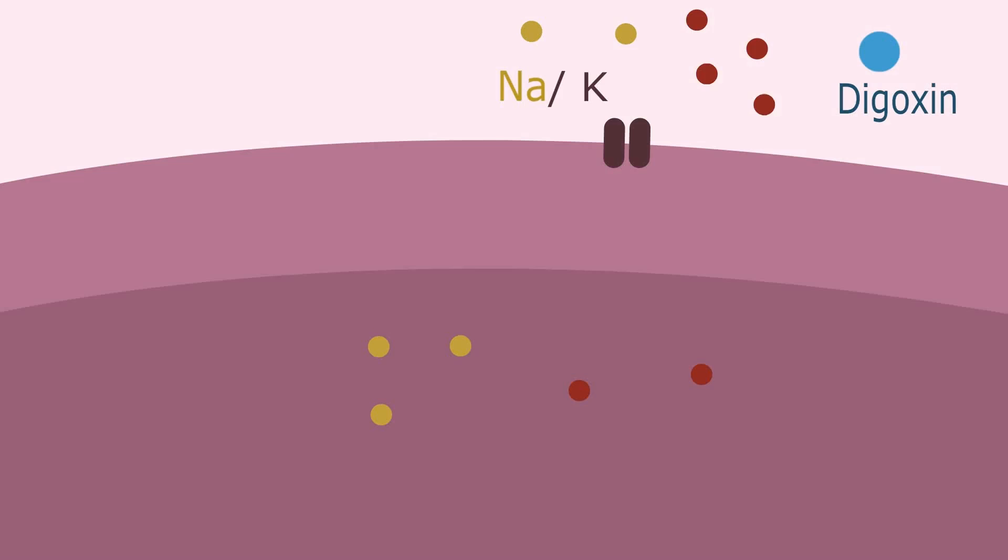Digoxin will bind to the sodium potassium channel and block its natural effect, which is to transport sodium out of the cell and potassium into the cell.